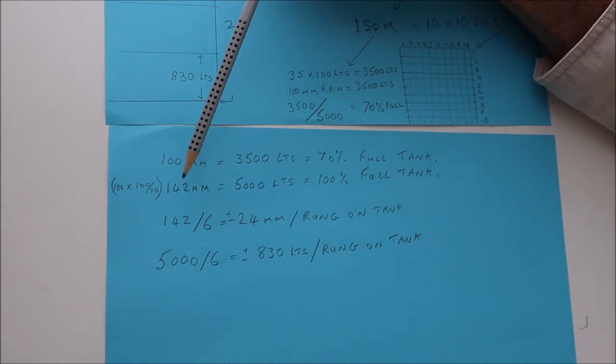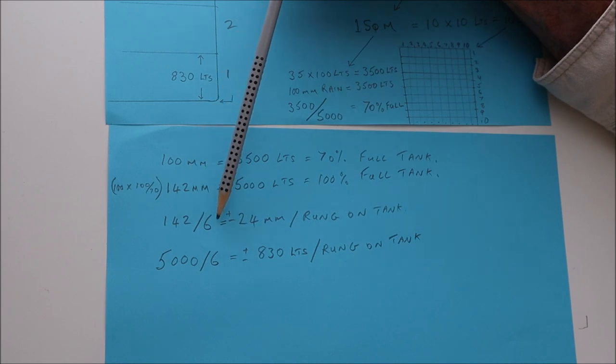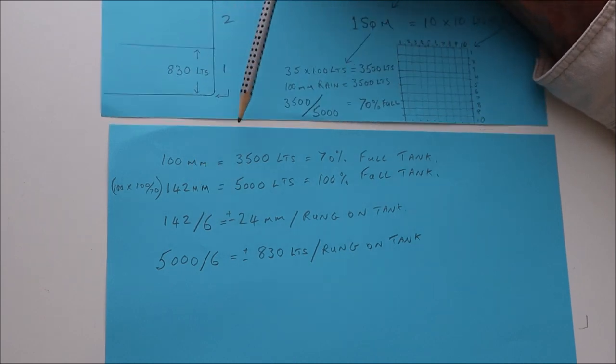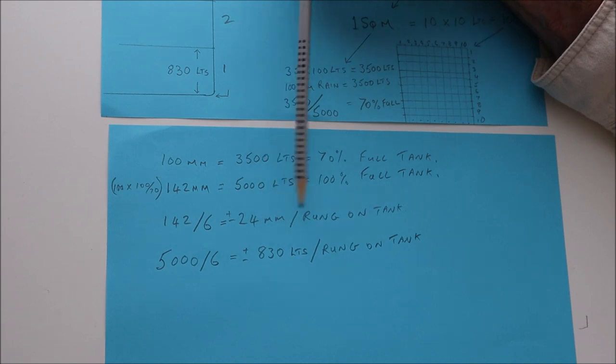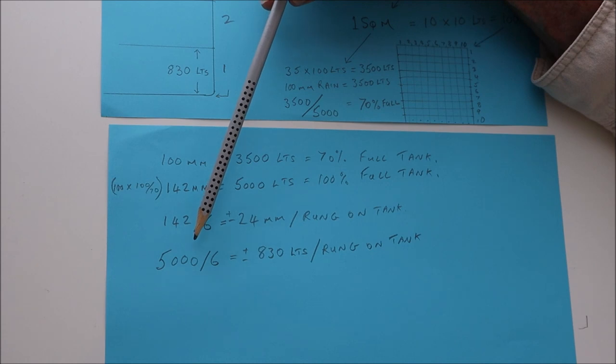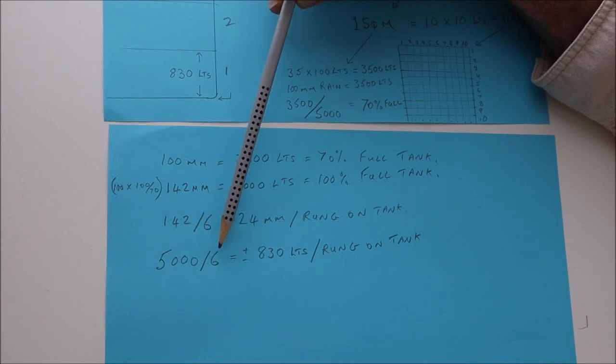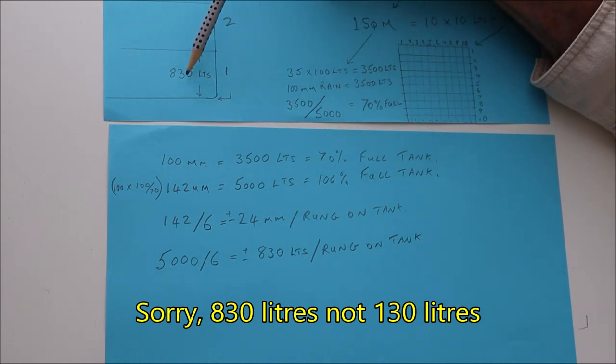If we divide the 142 millimeters by six, which is the number of rungs on the tank, it's going to take about 24 millimeters of rain to raise the tank by one rung. Then if we say 5,000 liters divided by six, that means each rung is 830, which is what we discussed right in the beginning.